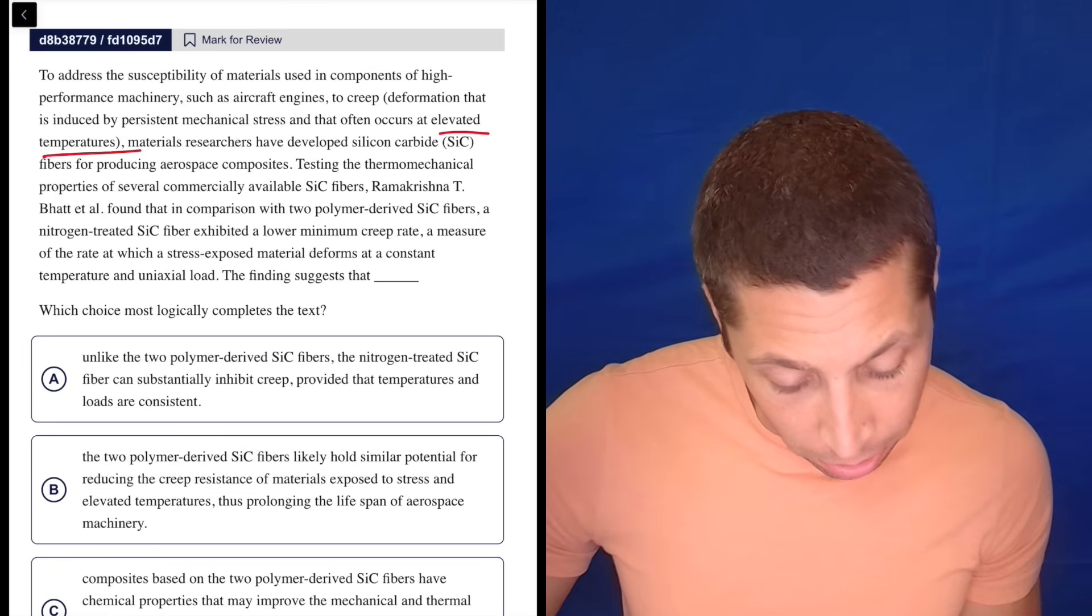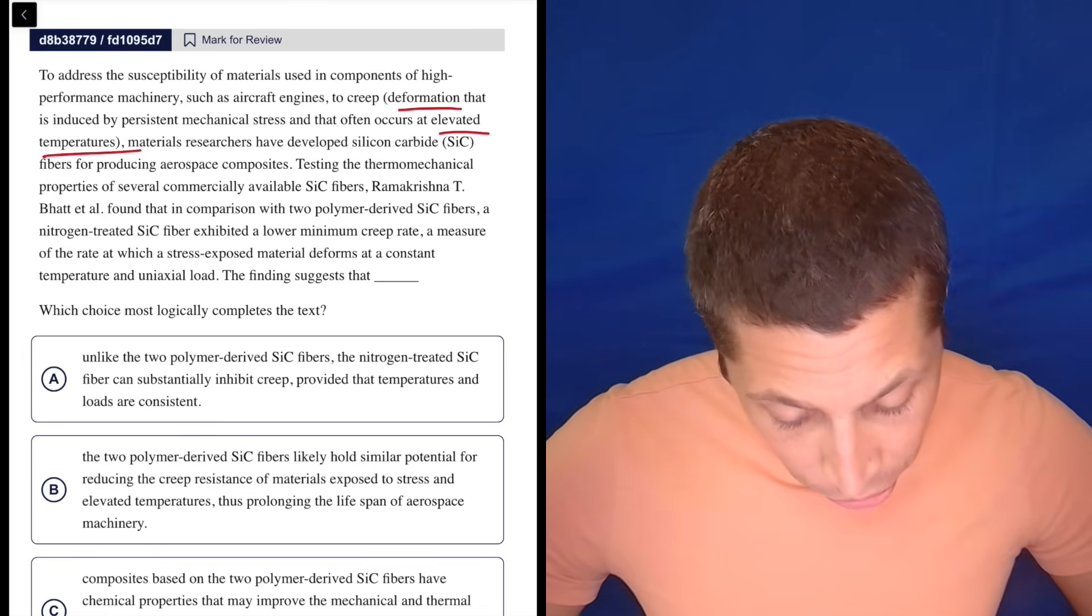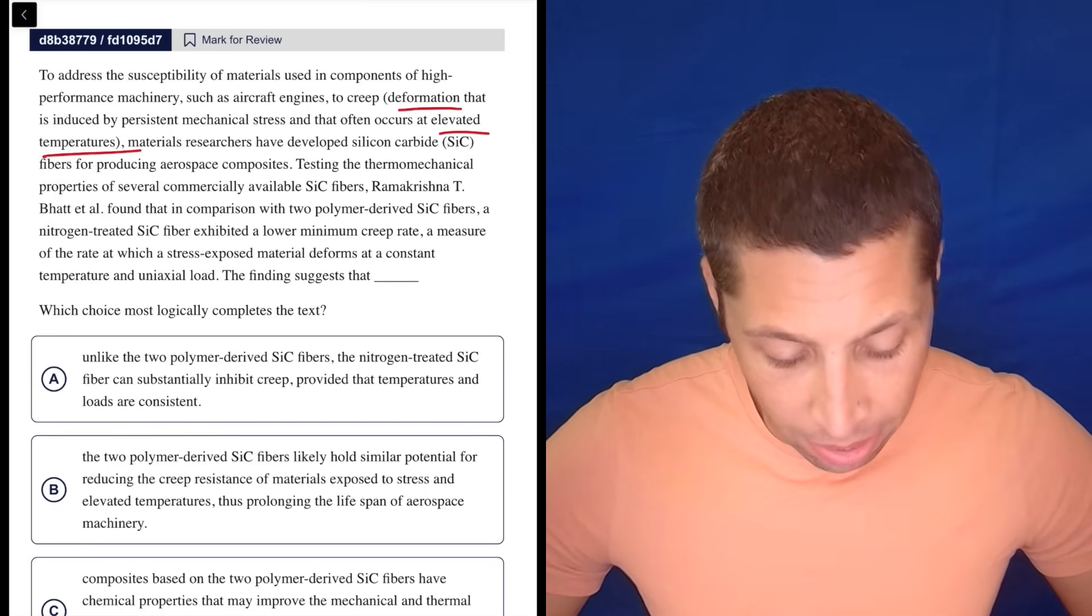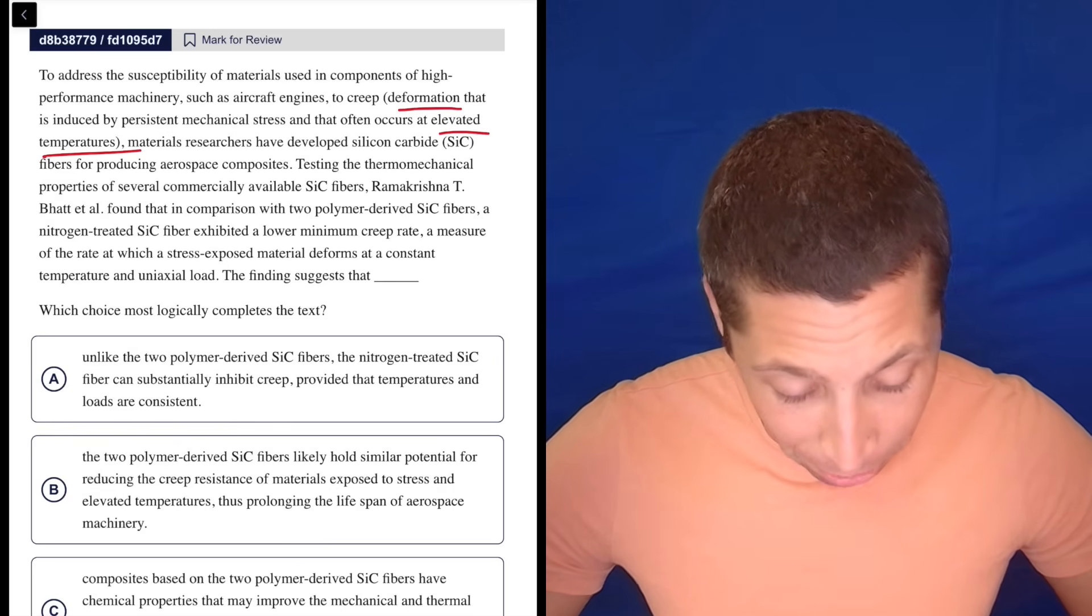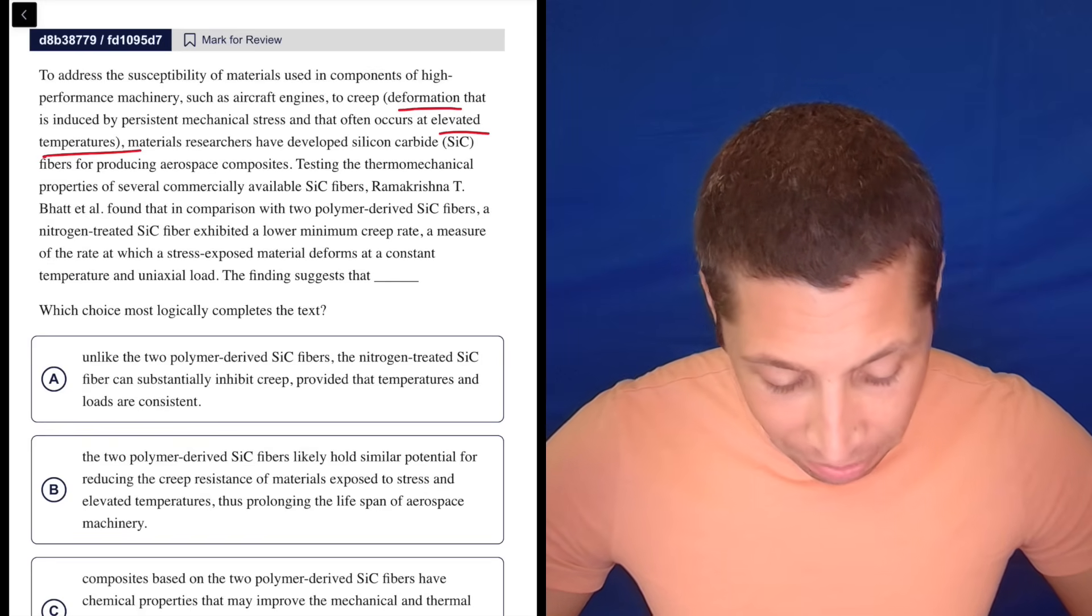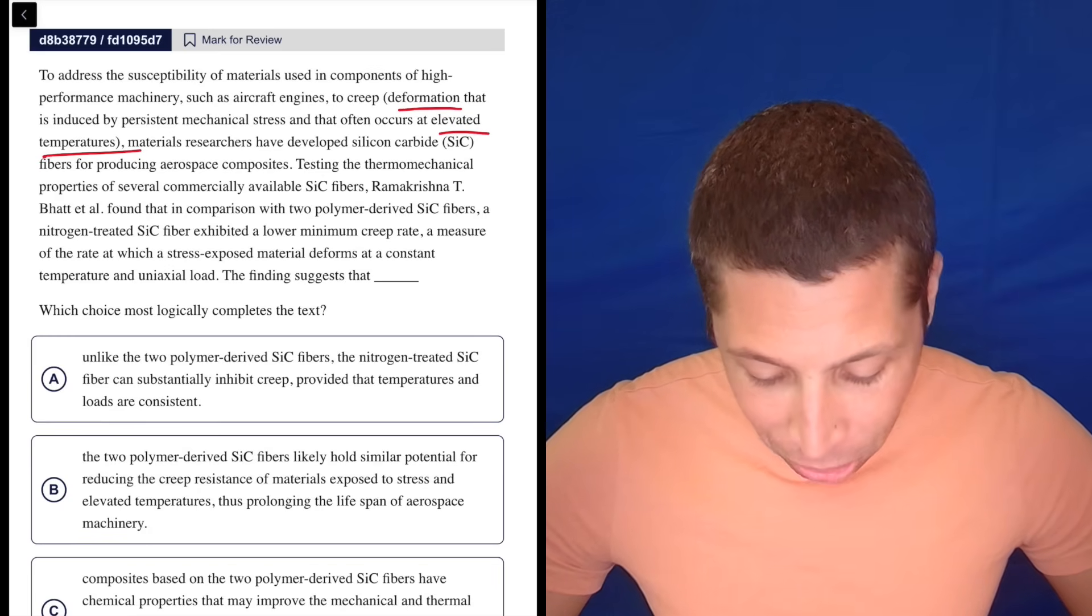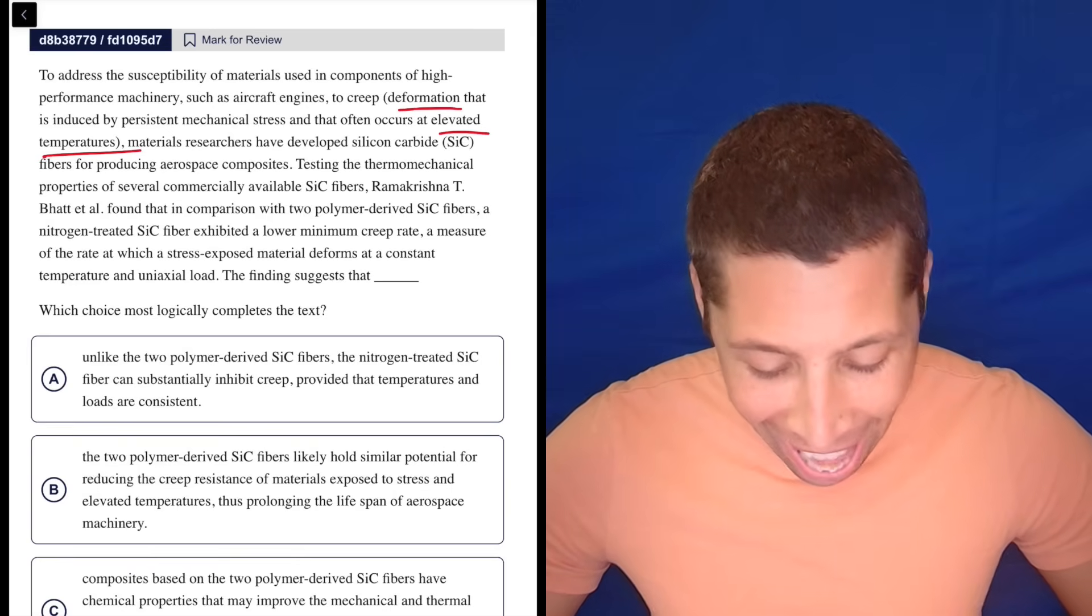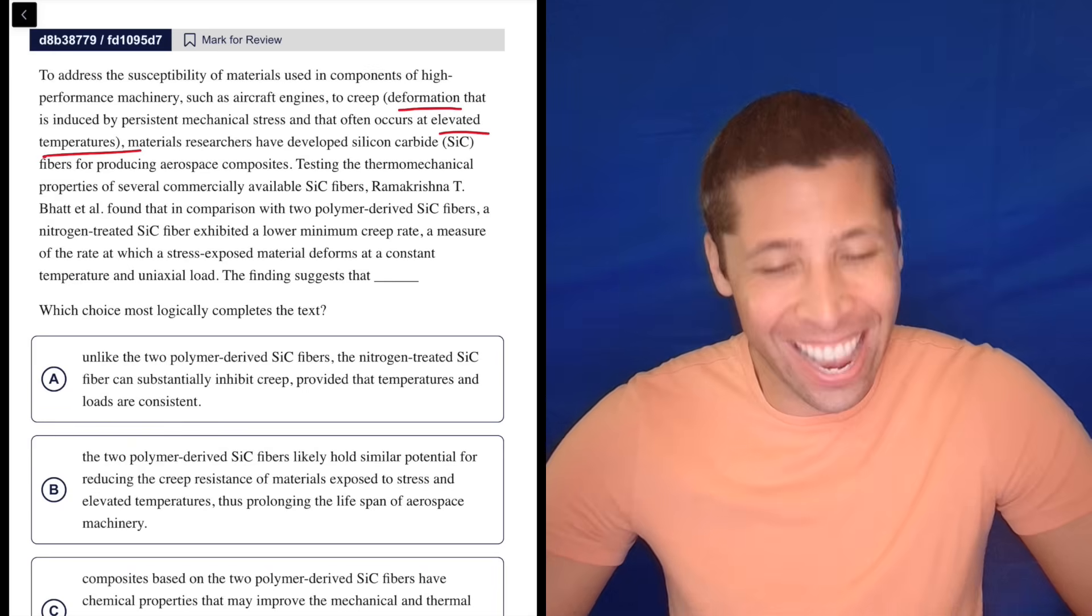...high temperature and deformed. Materials researchers have developed silicon carbide (SiC) fibers for producing aerospace composites. Testing the thermomechanical properties of several commercially available SiC fibers, these people found that in comparison with two polymer-derived SiC fibers, a nitrogen-treated SiC fiber exhibited a lower minimum creep rate—a measure of the rate at which a stress-exposed material deforms at a constant temperature and uniaxial load. The finding suggests that—oh this is so dense, I love it.